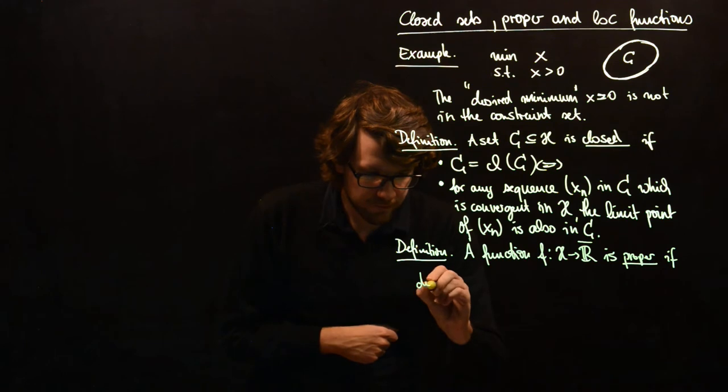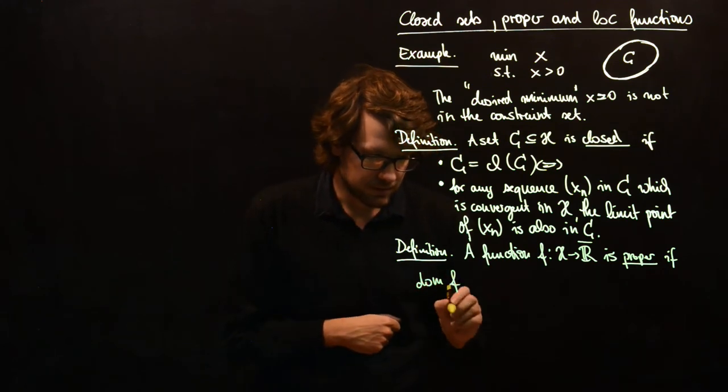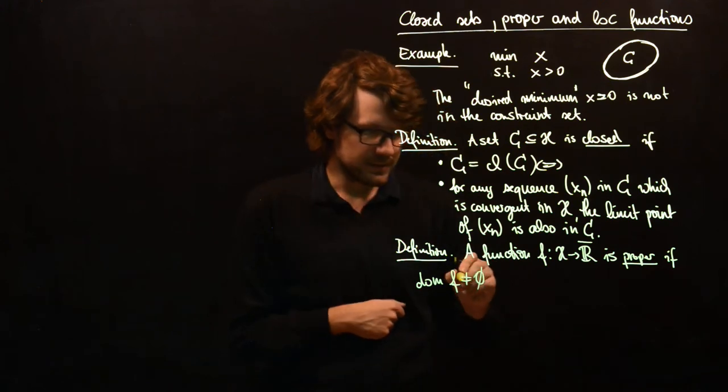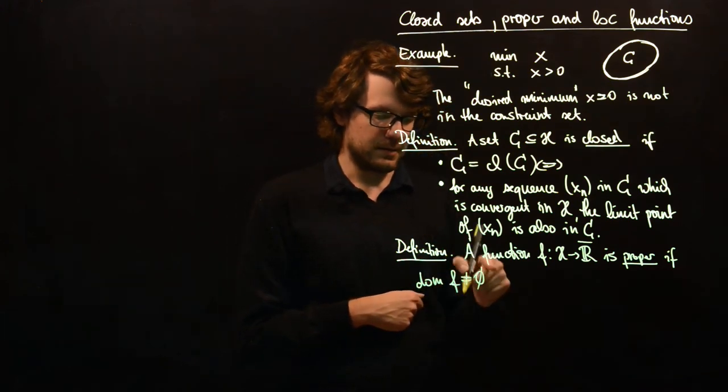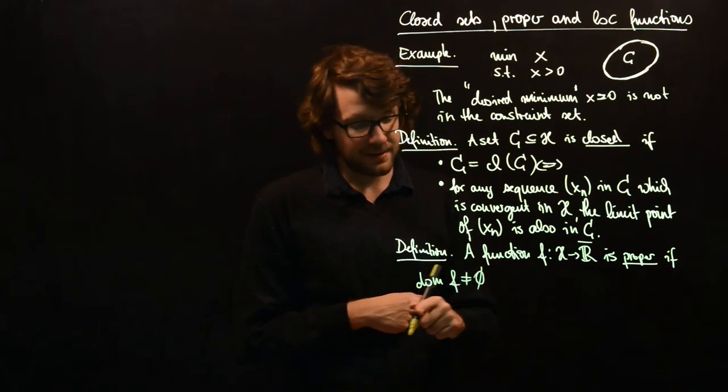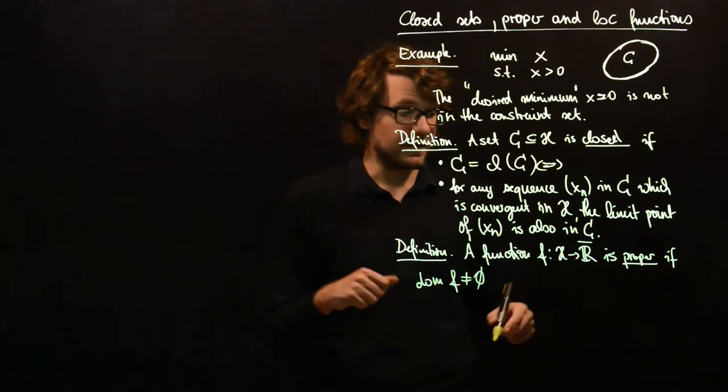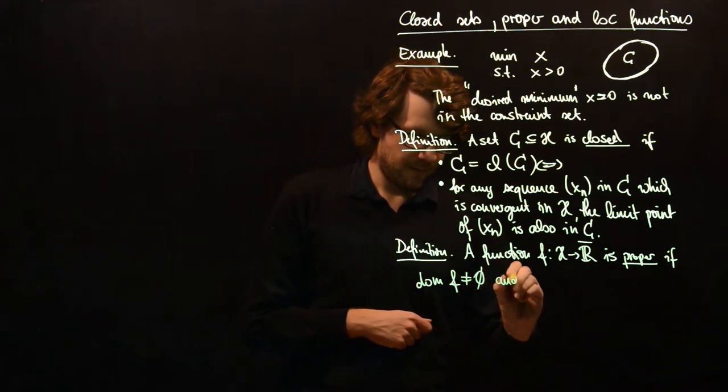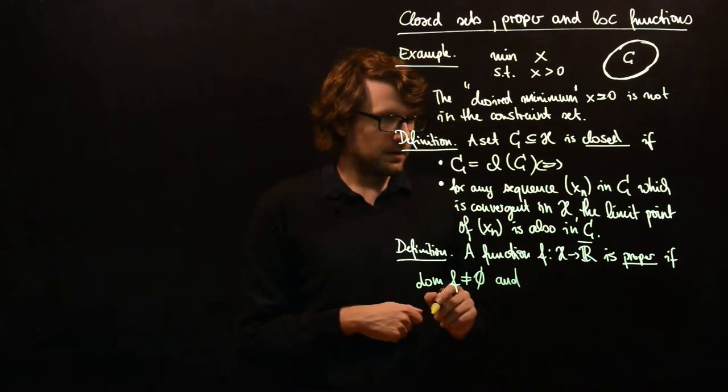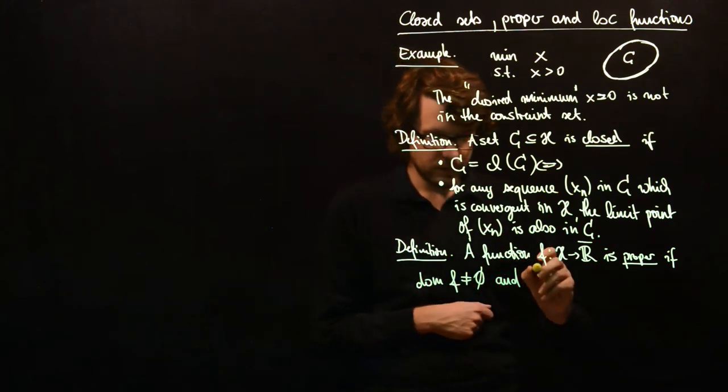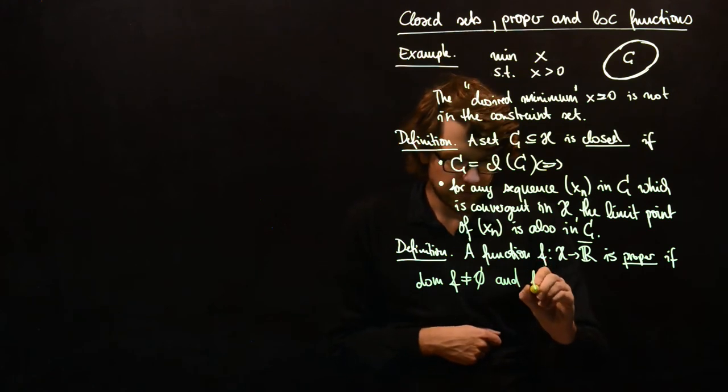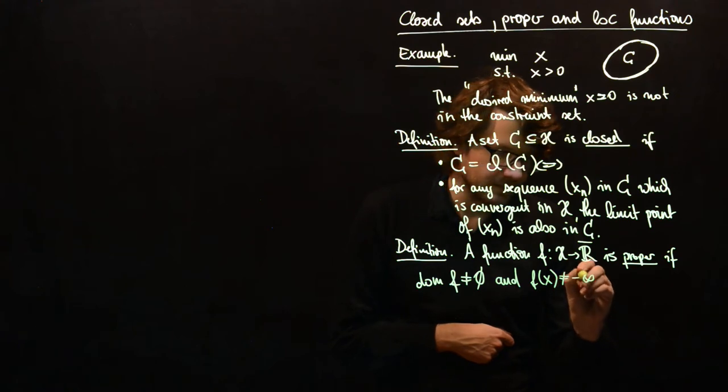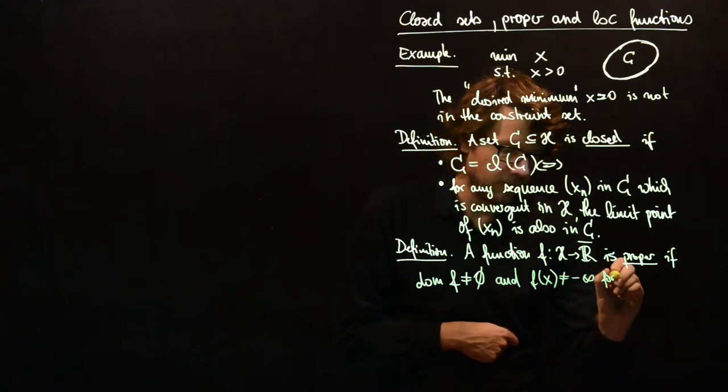So a function is proper if we have this domain, and the domain of f should not be the empty set, which means that there are points in the domain, and the domain is the set of points where the function value is less than plus infinity.